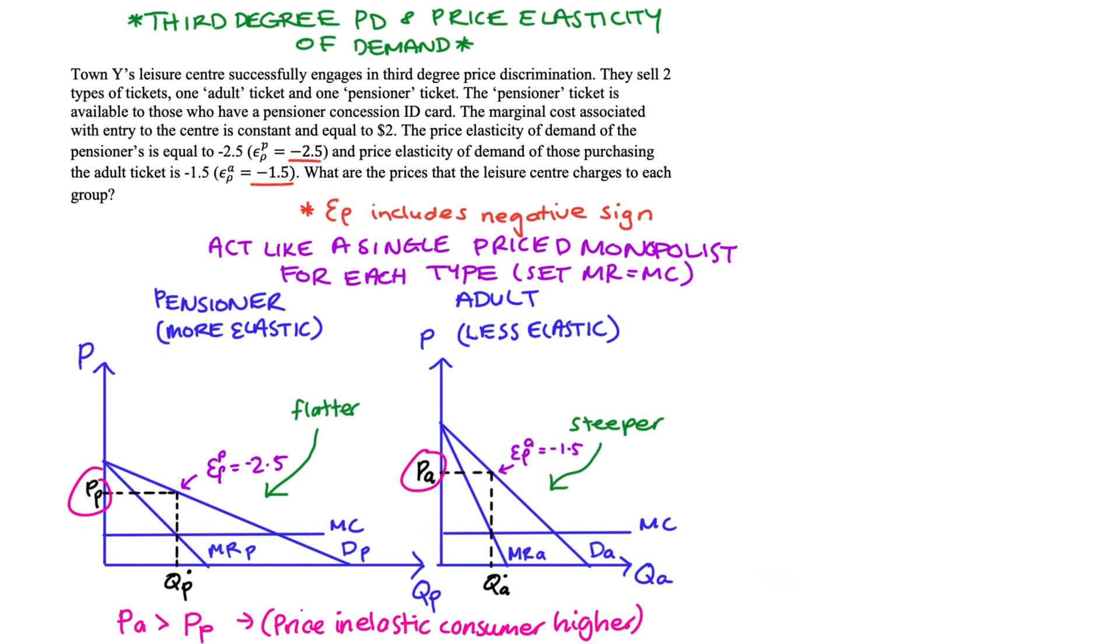Now, the relationship that we need to connect the prices to these elasticities is the one here in the top right-hand corner. The marginal revenue of the firm can actually be restated in terms of, we take the price, we multiply it by one plus one over our price elasticity of demand, epsilon p. So I have done a video on this condition. I'll link to it in the description below, as well as links to any other videos that might help you with the various stuff in this question.